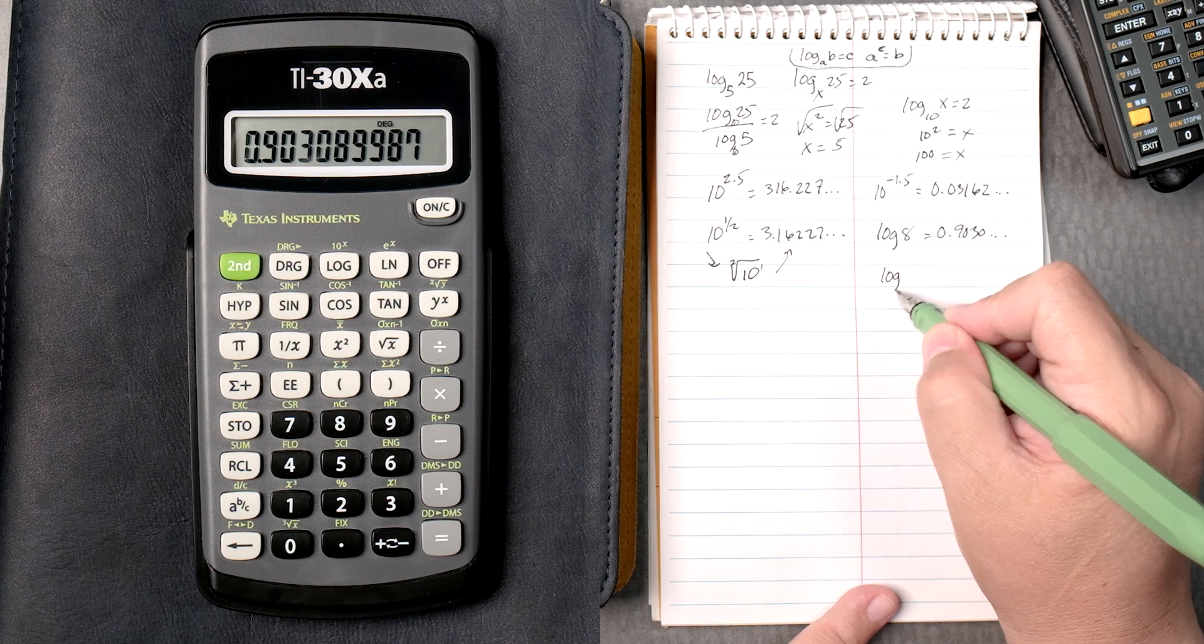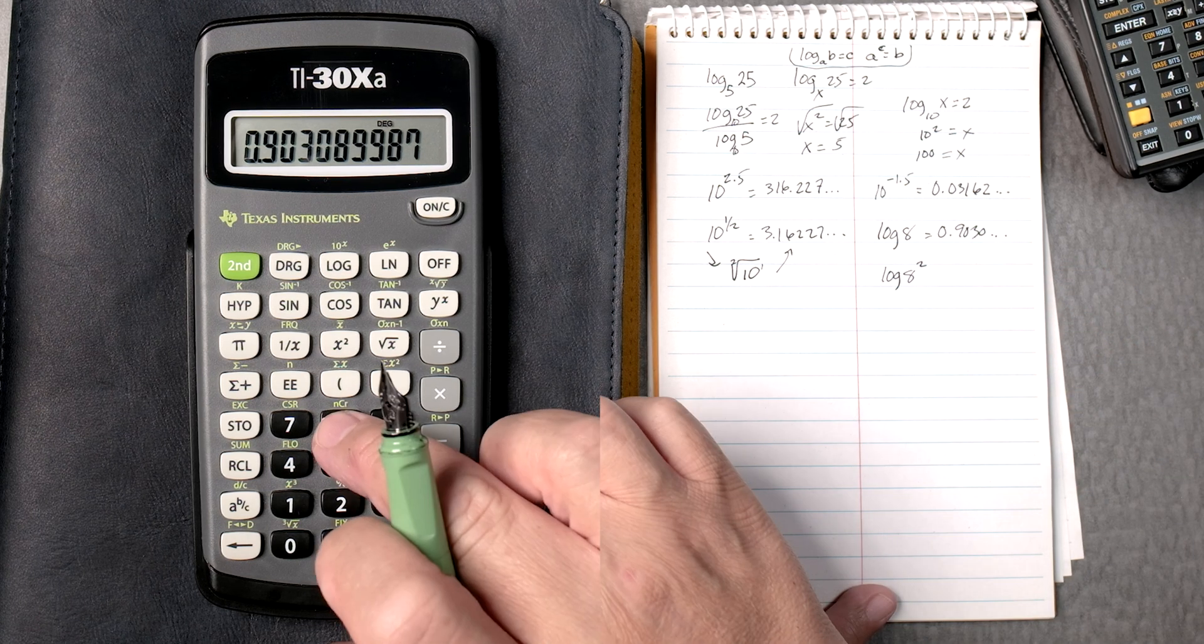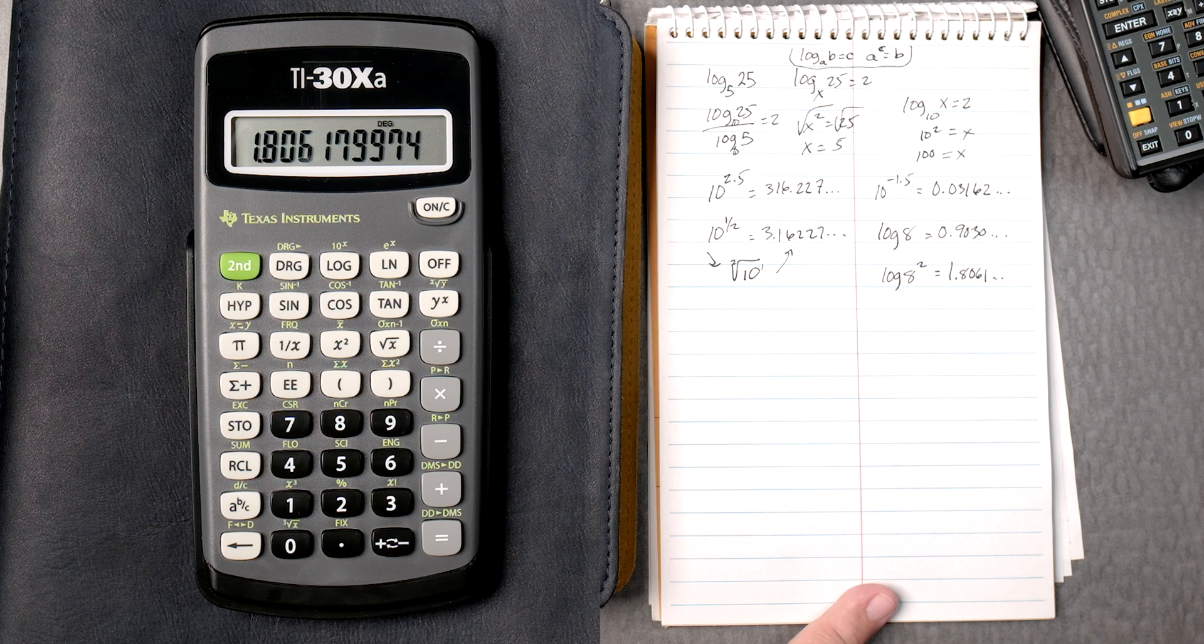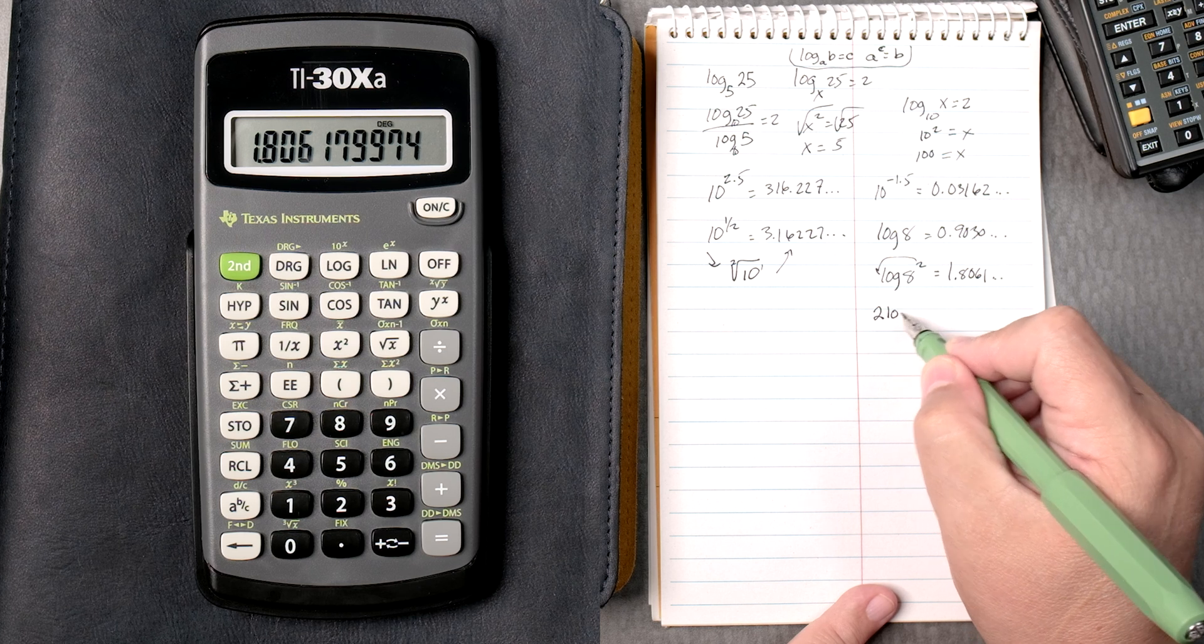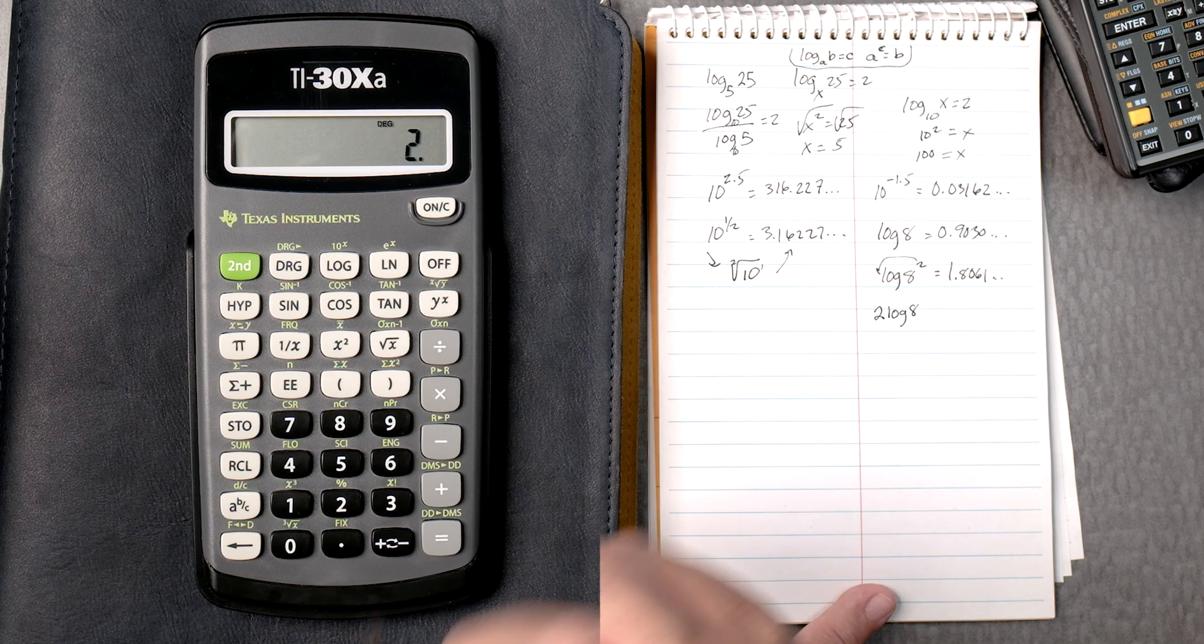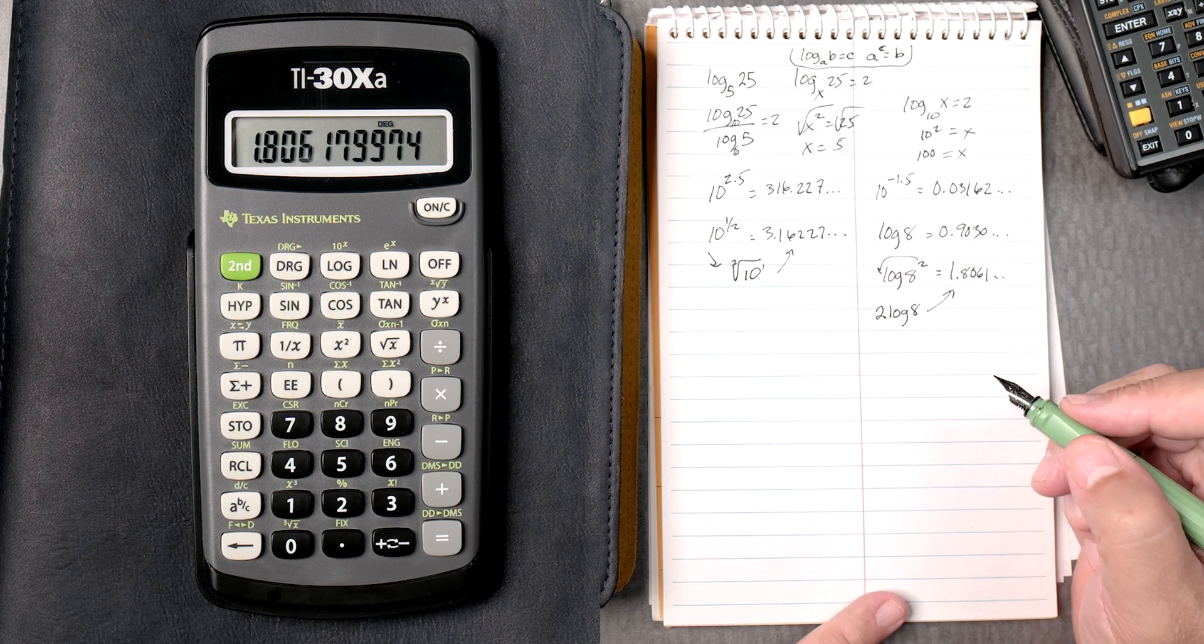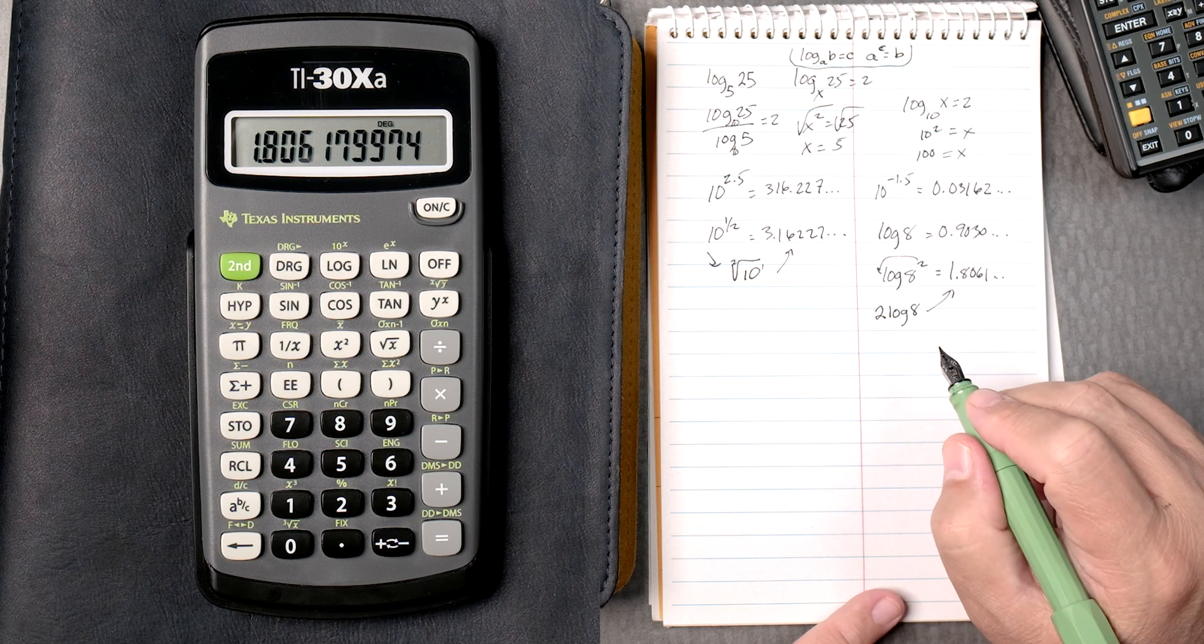How about the log of 8 squared? So, this one, you take 8, you square it, take the log, it gives you 1.8061 and gives you more numbers. Now, there's a rule that says you can bring down the 2, so 2 log of 8. So what you need to do is say, 2 times 8 log equals, and gives you the same answer. The combination of keys is important, so learning that combination is super critical.